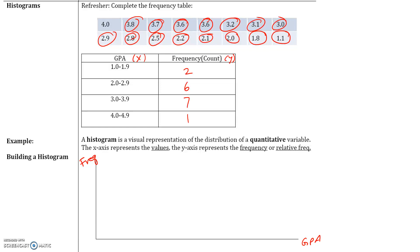Let's use a proper scale. We look at the lower limits: 1.0, 2.0, 3.0, 4.0. The lower limits will go on our x-axis. So this is 1.0, this is 2.0, this is 3.0, this is 4.0. And since it goes to 4.9, let's go to 5.0.